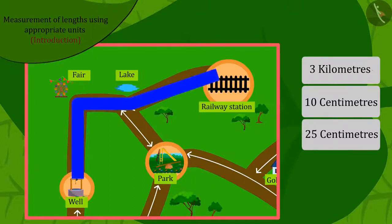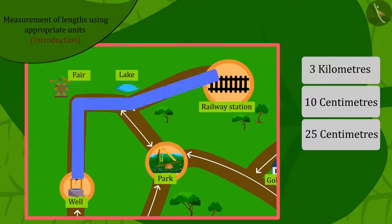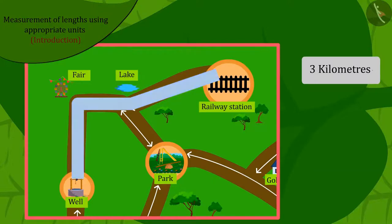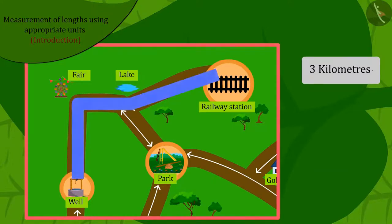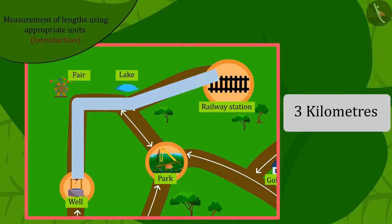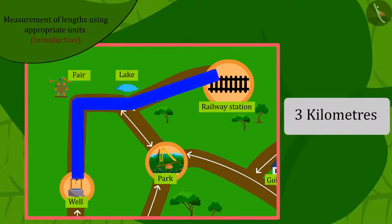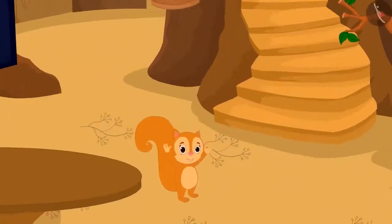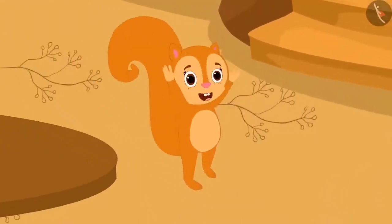Because the distance from the railway station to the well is very long, we cannot measure it in centimeters. Therefore, the distance from the railway station to the well will be three kilometers. After all, Chanda got all the measurements written by her to match. See how she is dancing happily!